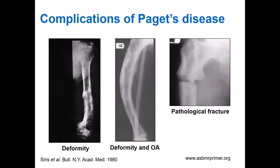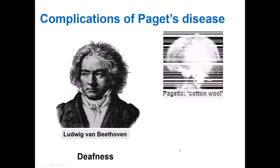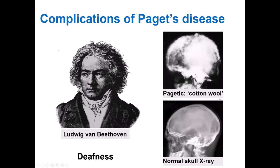This slide depicts some complications of Paget's disease. We've already spoken about deformities. These can cause secondary osteoarthritis, as seen here in this ankle joint showing narrowing of the joint space. Paget's bones can also fracture more easily — this is a femoral bone with a pathological fracture affected by Paget's disease. If Paget's disease affects the skull, it can cause decreased hearing acuity or deafness, and there is some evidence to suggest that Beethoven may have suffered from Paget's disease, which caused his deafness at an early age.